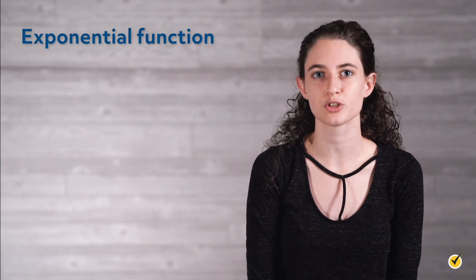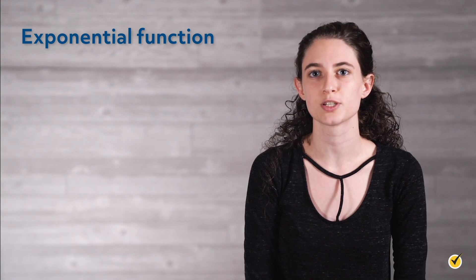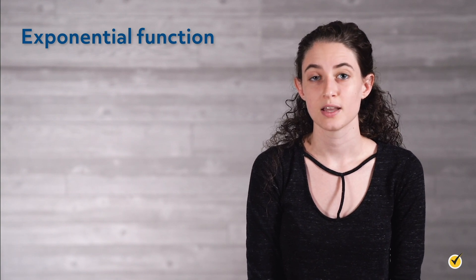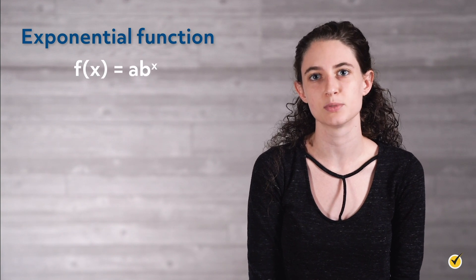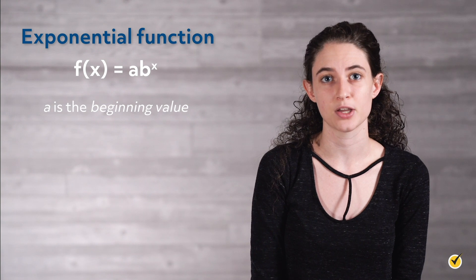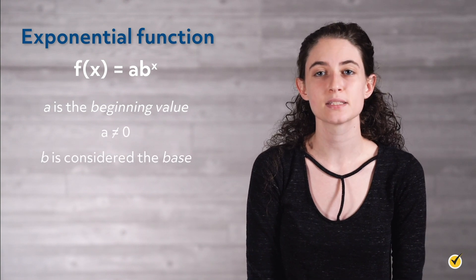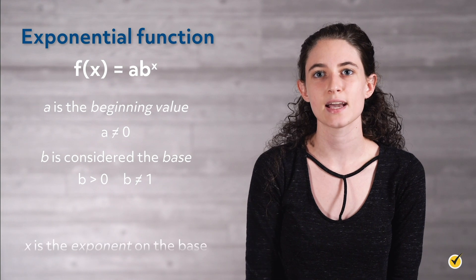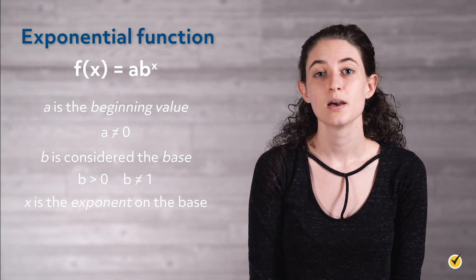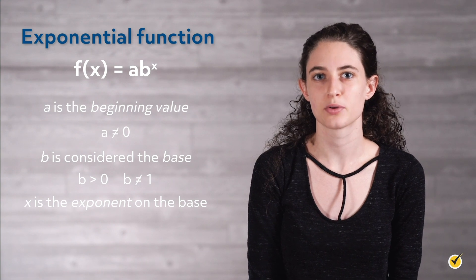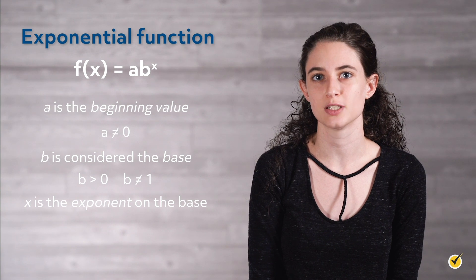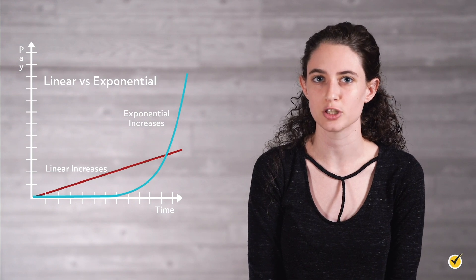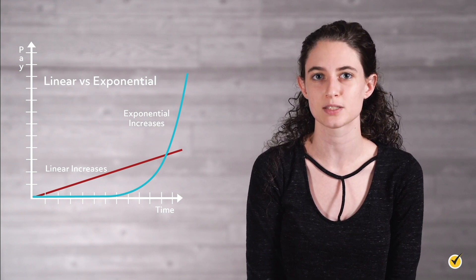In contrast, exponential functions, which are the focus of this video, are used as models for data that increase rapidly over time. This is known as a pattern of exponential growth. An exponential function is written in the form f of x equals a times b to the x, where a is the beginning value and a does not equal 0. b is considered the base; it reflects the growth factor. b is greater than 0 and b does not equal 1. And x is the exponent on the base. Because the growth factor b is being raised to a power that is a variable x, the rate of change in an exponential function is not constant. The graph shows the difference between the steady increase of a linear function and the extreme rapid increase of a function showing exponential growth over time.